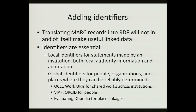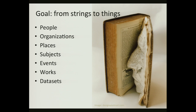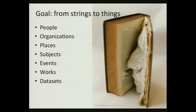Translating MARC records into RDF will not, in and of itself, make useful linked data. We need identifiers — local identifiers for statements made by our own institutions, and global identifiers for the things we want to share: people, organizations, places, and other things. Even among our three libraries, we need shared global identifiers to make connections across the project partners. We're seeking to use standard external identifiers as well — OCLC work URIs, VIAF, ORCIDs, and others. A goal of linked data in general, and our project in particular, is to go from standard metadata string expressions to actual URIs that really represent the thing — for people, organizations, places, subjects, and the rest.